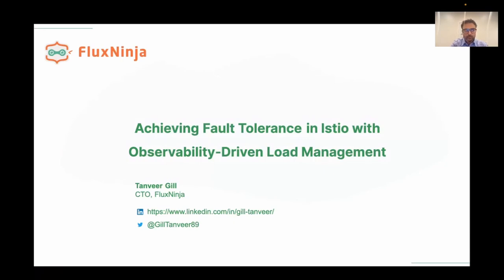Let's start by talking about the base capabilities you get in Istio today. The capabilities of Istio are centered around three pillars. The first one is security: basic encryption between services, mutual TLS between services, and also some basic access control — use cases such as micro-segmentation, making sure that services are talking to each other intentfully.